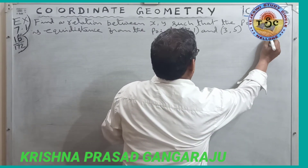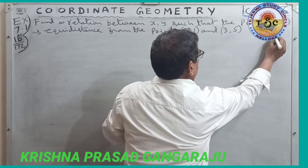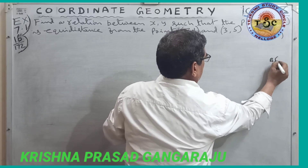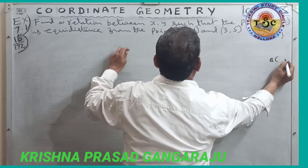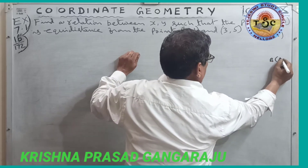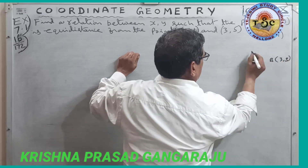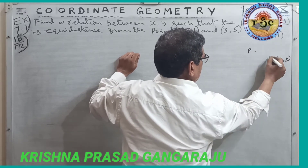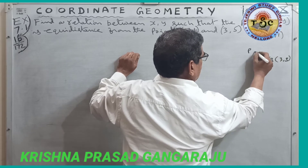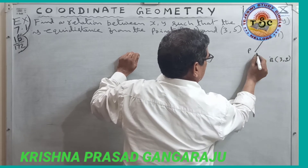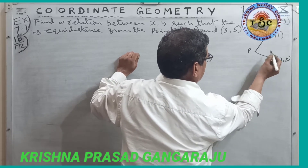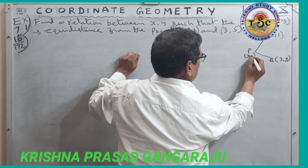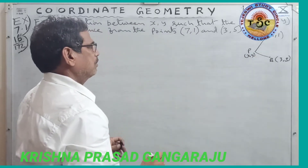A is equal to (7, 1), B is equal to (3, 5). P is equidistant from A and B — that is the condition given in the question.